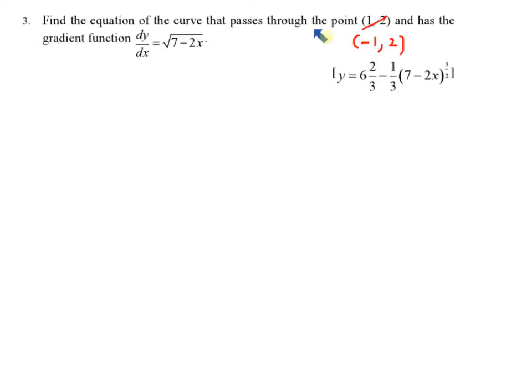Example 3. Find the equation of the curve that passes through the point negative 1, 2. There's a typo mistake here. Please change 1, 2 to negative 1, 2 and has the gradient function dy/dx equal to square root 7 minus 2x.